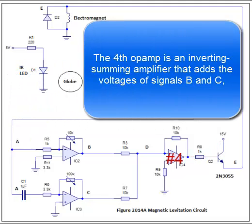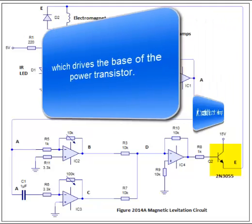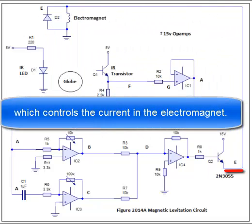The fourth op-amp is an inverting summing amplifier that adds the voltages of signals B and C, which drives the base of the power transistor, which controls the current in the electromagnet.